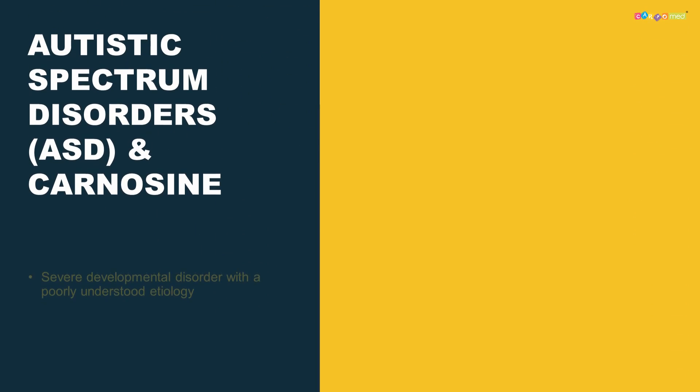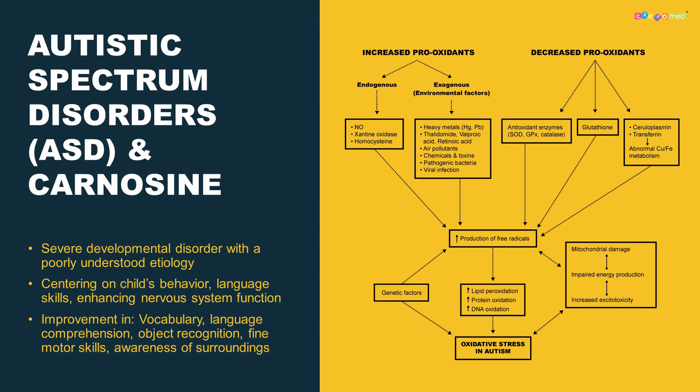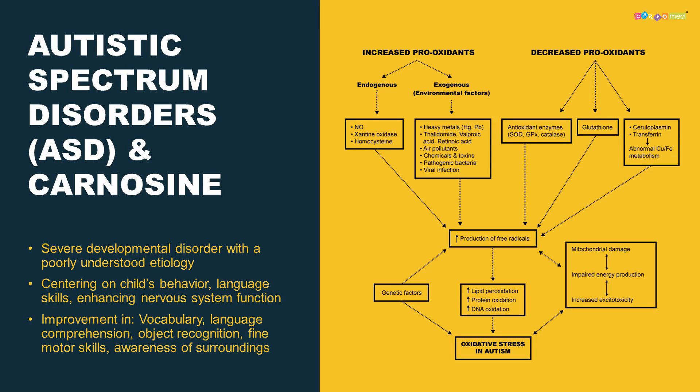Autism is a severe developmental disorder with a poorly understood etiology and causes. Genetics certainly plays its role, but this rapid growth cannot be explained only by genetics. Some external environmental factors have something to do with autism. We don't know the exact cause, but some facts are well researched and published in very important journals. Let's see what we actually know about autism.